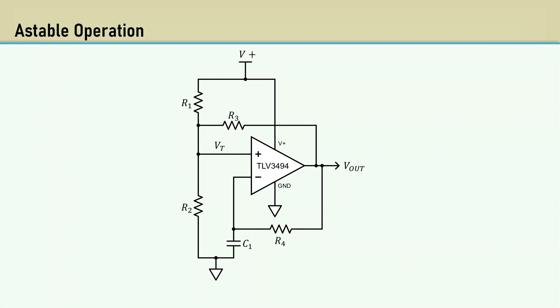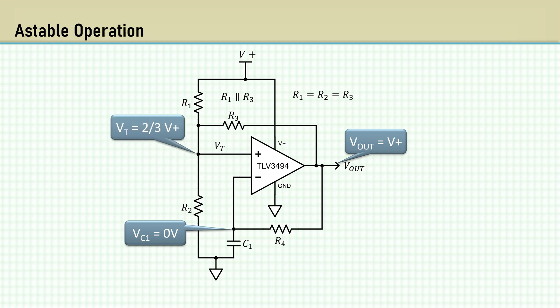Here's the circuit. For simplicity, the resistance values of R1, R2, and R3 are equal. At power-up, C1 has no charge, so the inverting terminal of the comparator is at zero volts. This makes Vout push to the positive rail and is equal to V+. This essentially puts R1 in parallel with R3, and therefore, the threshold voltage Vt at the non-inverting terminal is two-thirds V+.